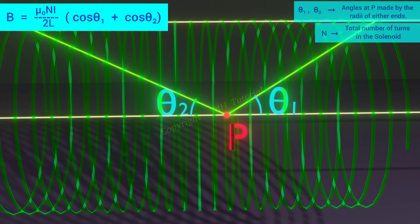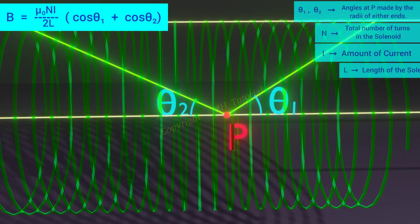The quantity n is the total number of turns of the coil. I is the amount of current flowing through it. The length of the solenoid is L.